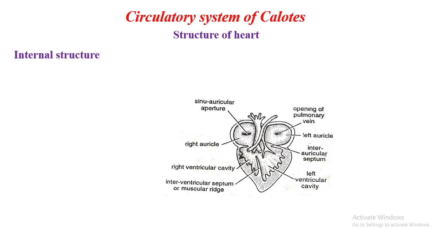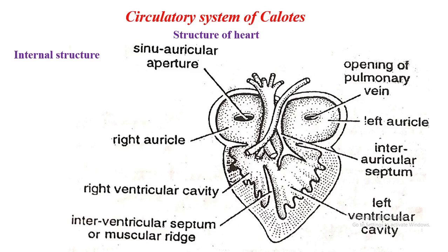Internally, both auricles are separated from each other by the interauricular septum. The right auricle is somewhat larger and the left auricle is somewhat smaller. The right auricle has the opening of the sinus venosus, known as the sino-atrial aperture, guarded by a pair of flap-like SA valves. The left auricle has the opening of the pulmonary vein. Both auricles open into the ventricle through separate right AV and left AV apertures, guarded by auriculoventricular valves.